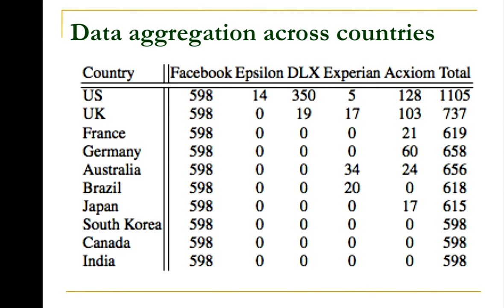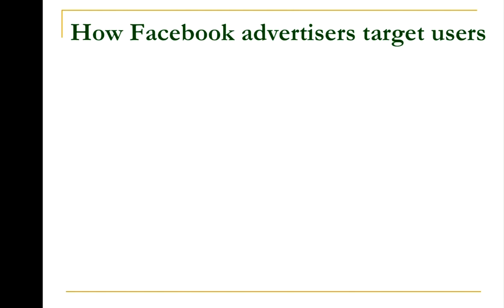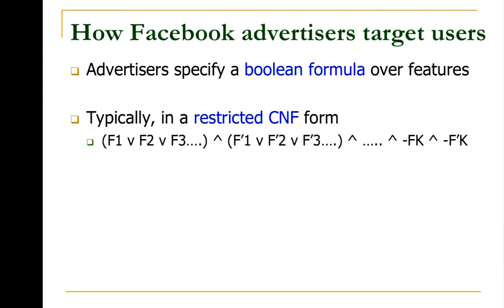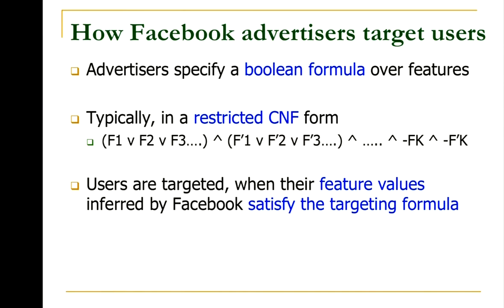In terms of how Facebook advertisers target users, advertisers specify a boolean formula over the features — basically, you say you want to target everybody who has feature one, feature two, and feature three. Users are targeted whenever their feature vector satisfies that formula. Let me show you a quick demo of how easy it is to get census-like data. I'll risk doing a live demo to understand the census of IIT Kharagpur.